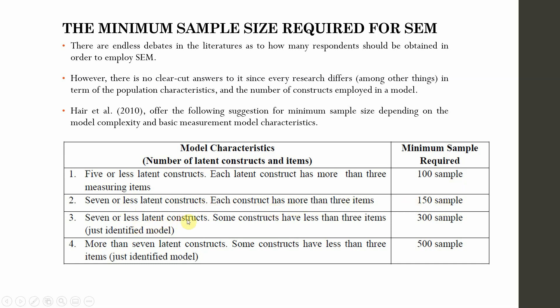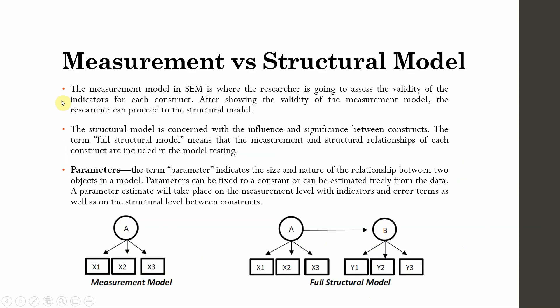Seven or less latent constructs, some constructs have less than three items, you need 300 sample. This is the guideline provided by Hair et al. in 2010.